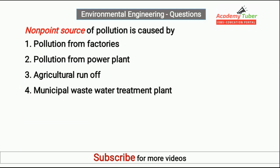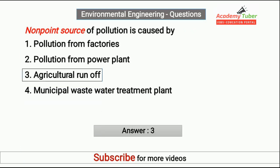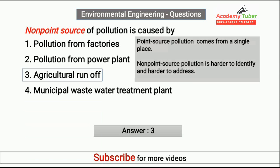Non-point source of pollution is caused by? Answer is agricultural runoff. Point source pollution comes from a single place and is identifiable, whereas non-point source of pollution is harder to identify and harder to address.